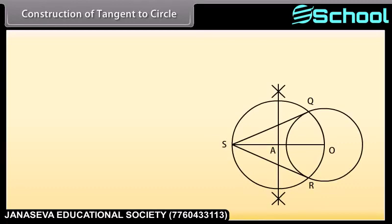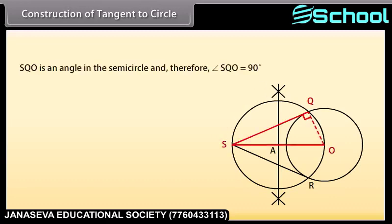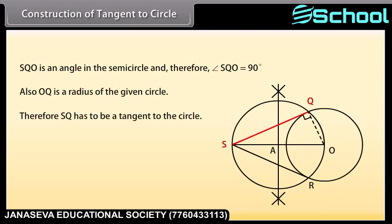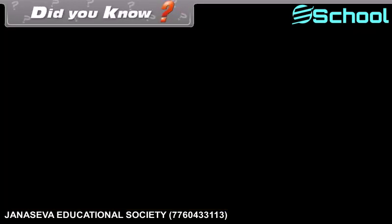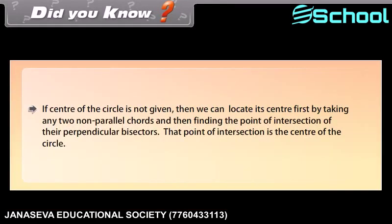Let us now check how this construction provides the required tangents. Join OQ. We can see that angle SQO is an angle in the semicircle and therefore angle SQO equals 90 degrees. Also, OQ is a radius of the given circle. Therefore SQ has to be a tangent to the circle. Similarly, SR is also a tangent to the circle. Did you know? If the center of the circle is not given, we can locate its center first by taking any two non-parallel chords and then finding the point of intersection of their perpendicular bisectors — that point of intersection is the center of the circle.